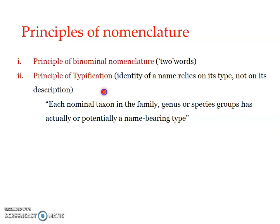The type specimen upon which the first publication or first naming is based is known as a holotype — H-O-L-O-T-Y-P-E. The holotype is the specimen used for describing and naming a particular species or any other taxon for the first time. For example, if a scientist is working on a new insect species, the single specimen used to describe all structural features and assign the name becomes the holotype.